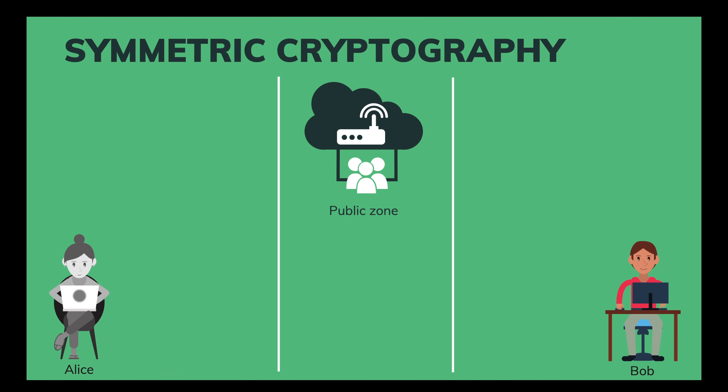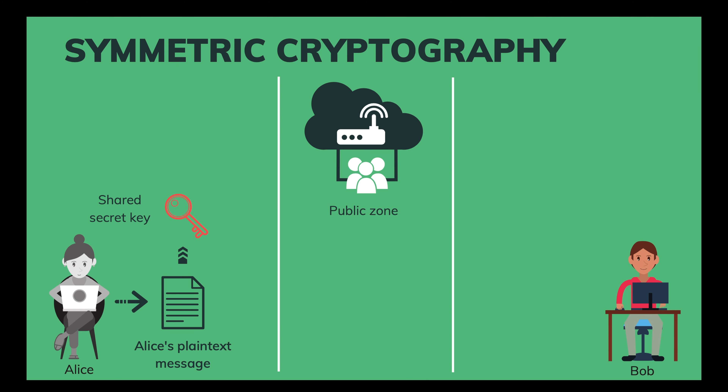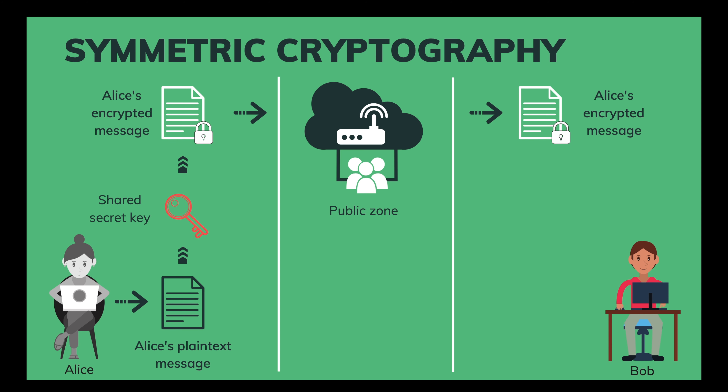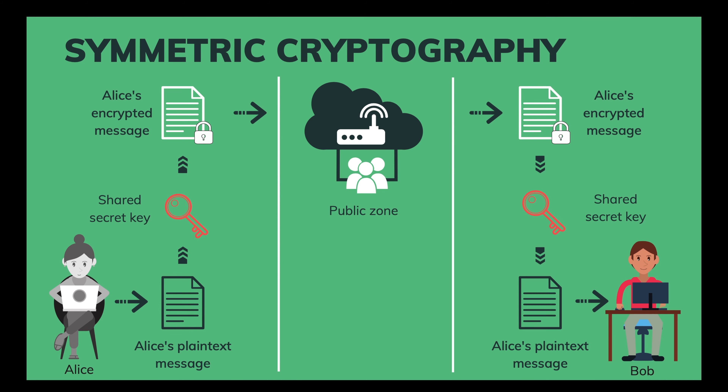Now let's learn more about symmetric cryptography. Alice has a plaintext message she wants to send to Bob but doesn't want anyone in the public zone to read it. So she encrypts the message with the secret key they have shared with each other before, then sends the encrypted message to Bob via the public internet. Upon receiving it, Bob uses the same secret key to decrypt it. Since the same key is used for encryption and decryption, it's kind of symmetric — hence the name. Now there might be a hacker Harry who can catch their exchanged messages on the public network. However, the message is already encrypted and Harry doesn't have the secret key, so he won't be able to decrypt it.